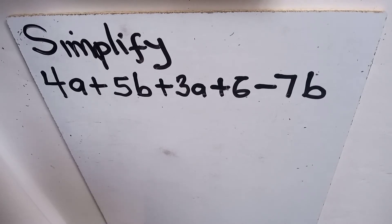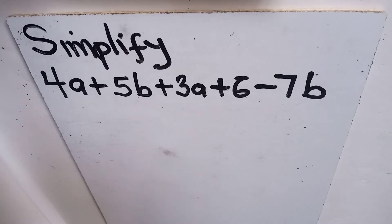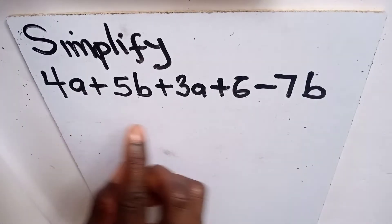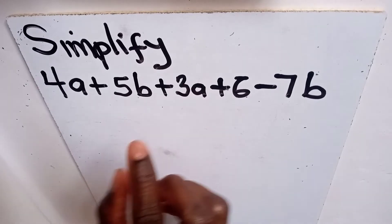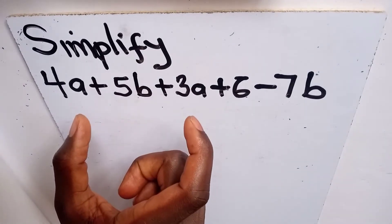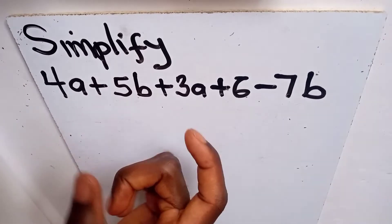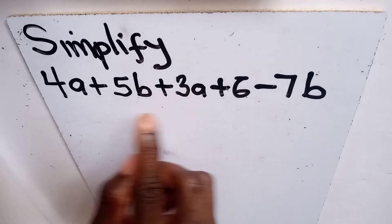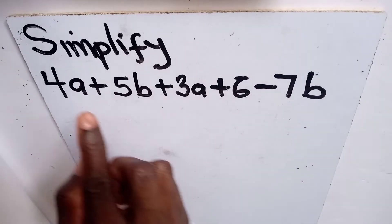When we say like terms, we are talking about the terms which have the same variables or the same identity. When you check this algebraic expression, we have 4a and 3a — these numbers are being multiplied by a, so they have the same letters or variables. The coefficient of a in this expression becomes 4 and 3.